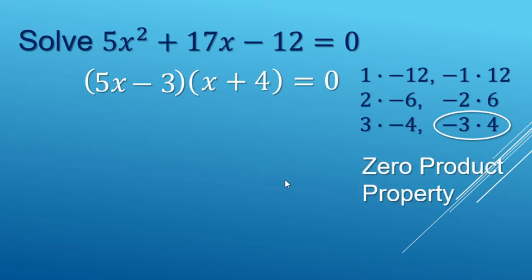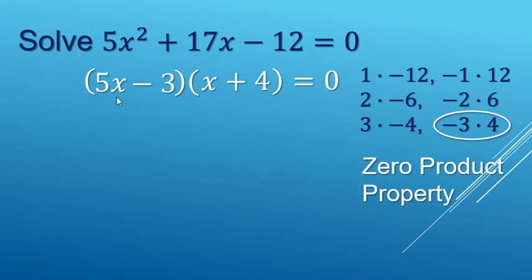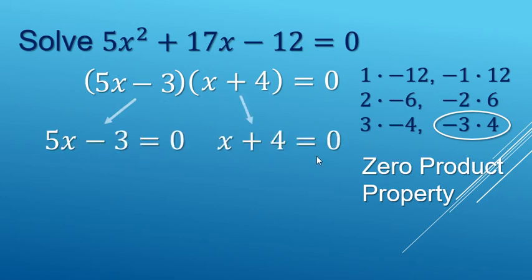So now we can use the zero product property. We have 5x minus 3 equals 0, or x plus 4 equals 0.